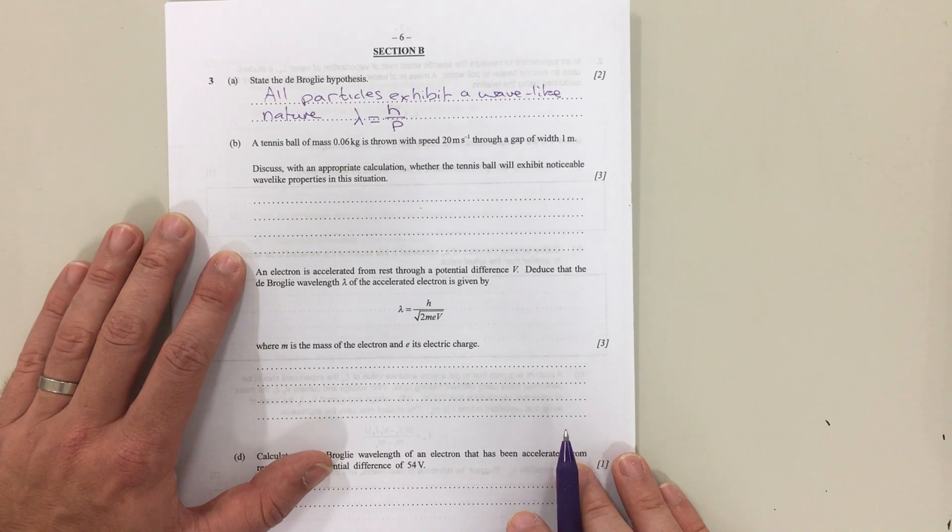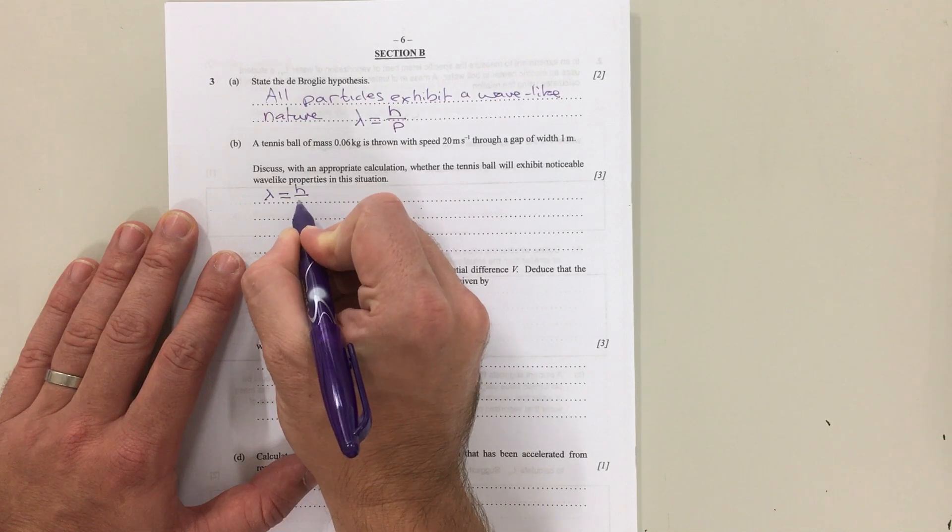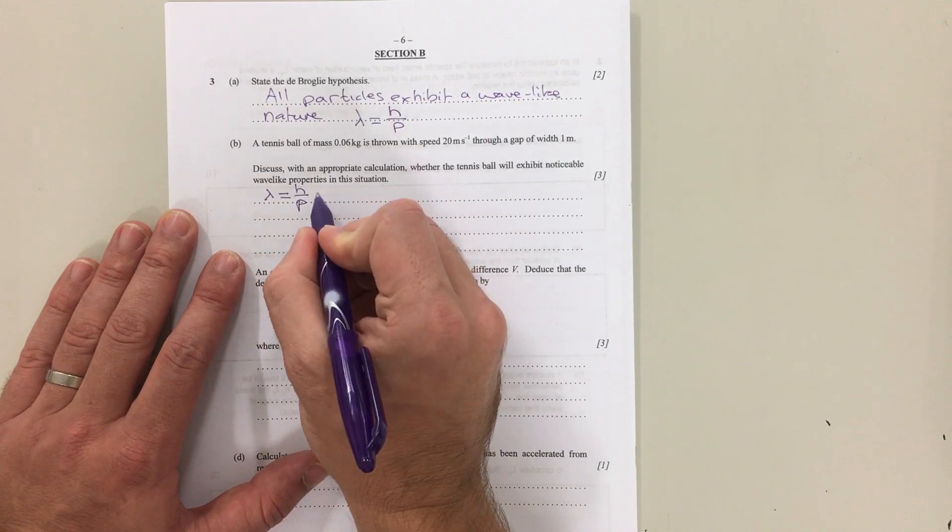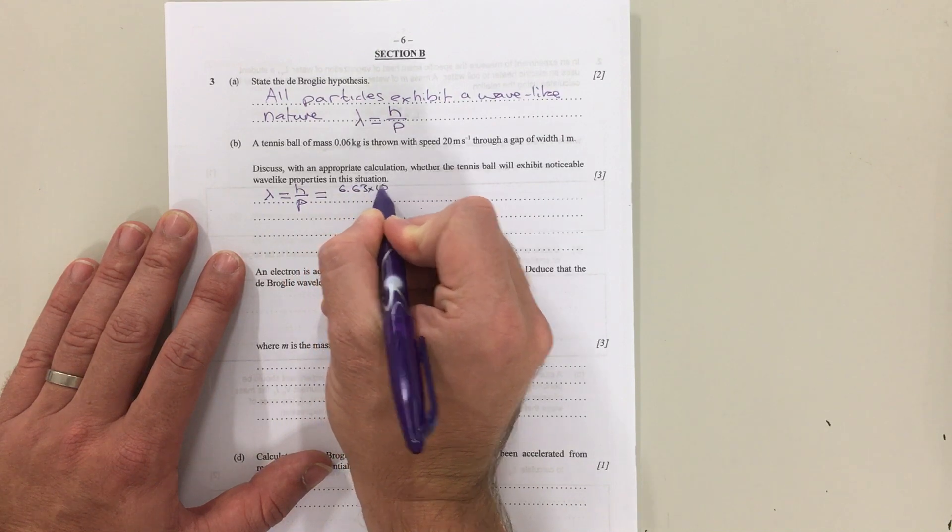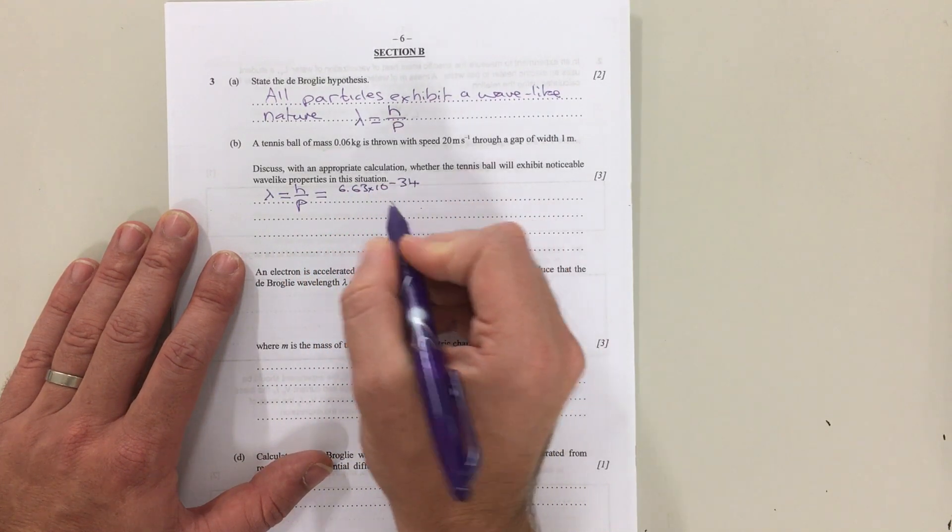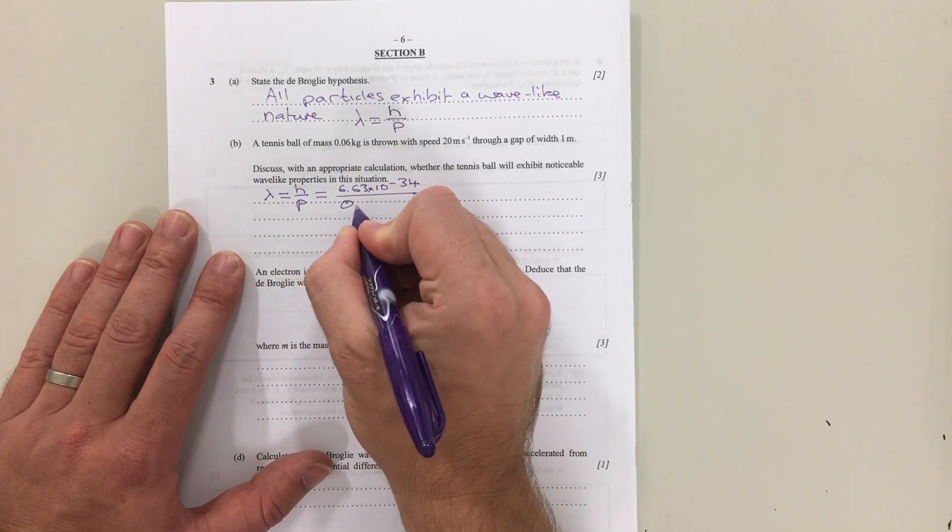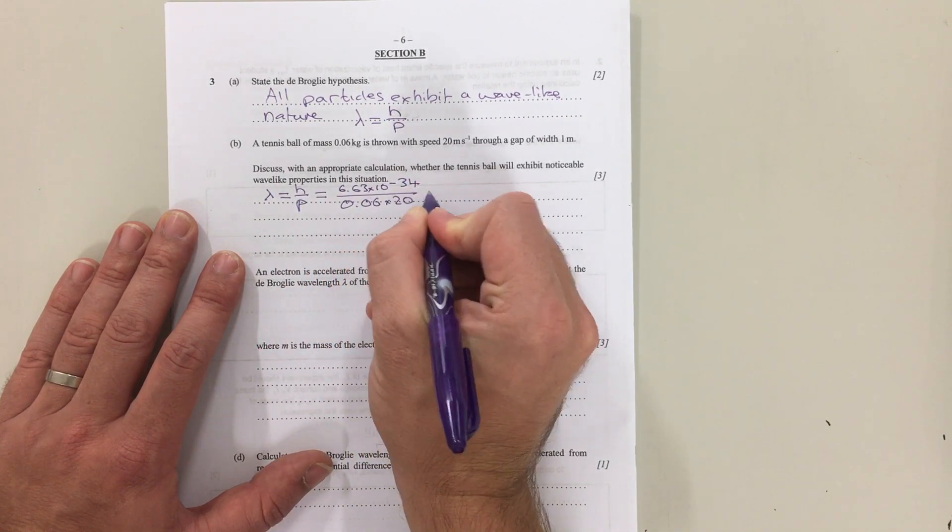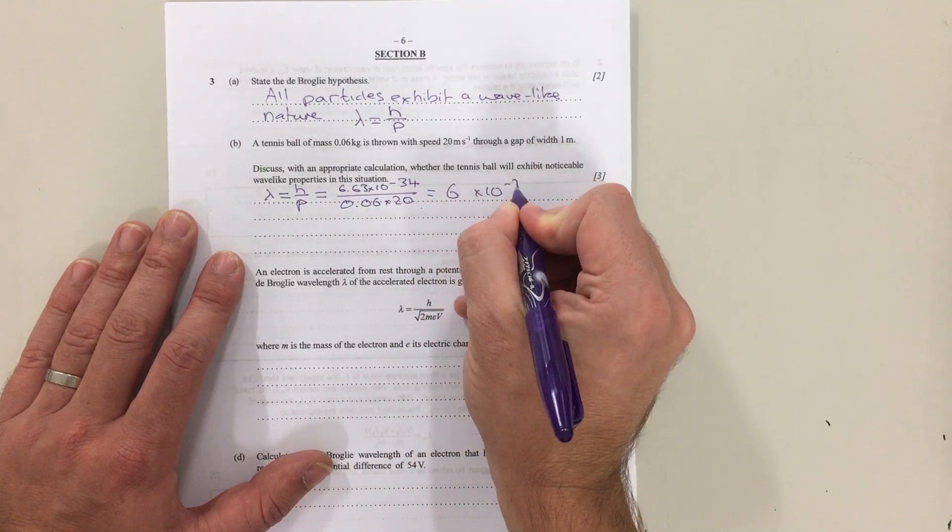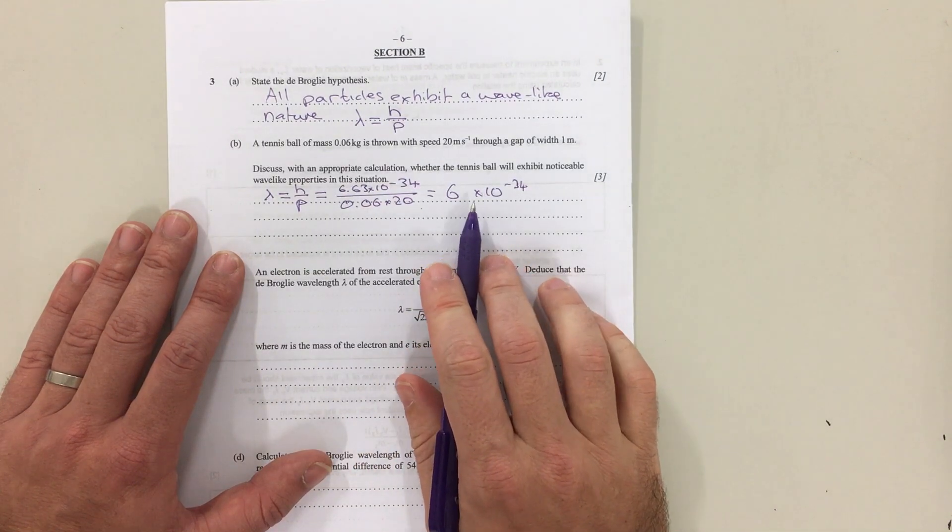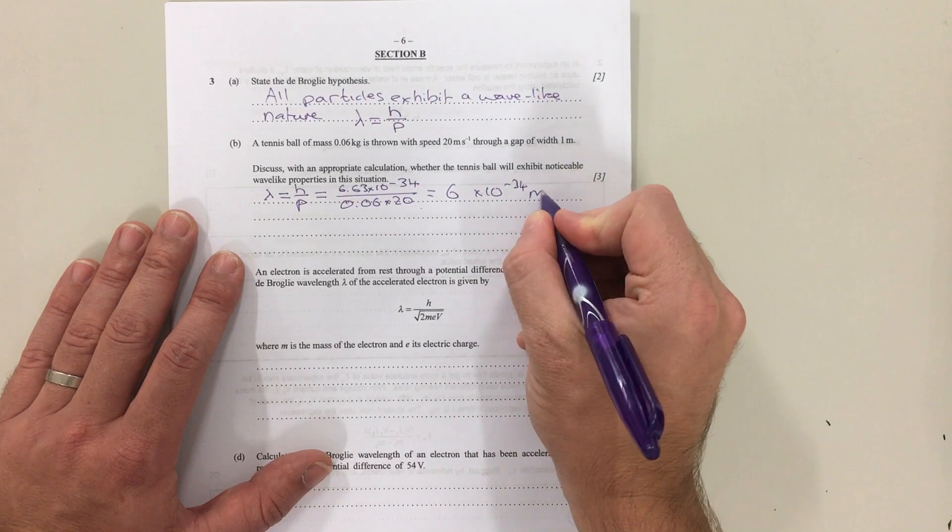The first thing we can do is work out what the wavelength of that tennis ball would be. So λ = h/p, which gives us 6.63 × 10⁻³⁴ divided by p, which is mass times velocity, so 0.06 × 20. That gives us a wavelength of about 6 × 10⁻³⁴. Now that wavelength is way smaller than the gap of 1 meter.